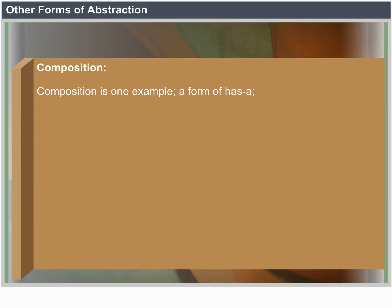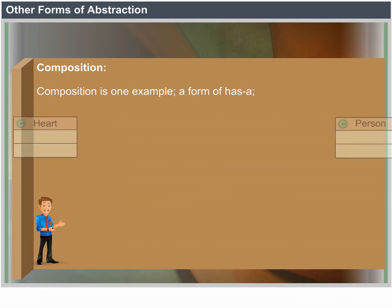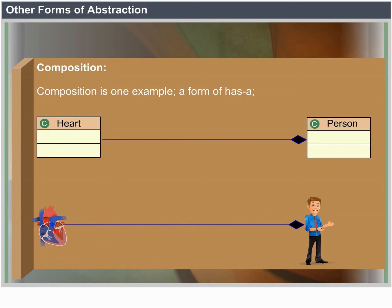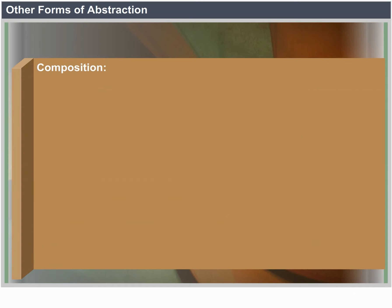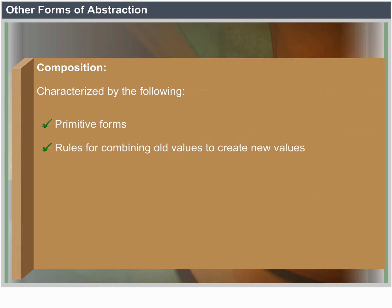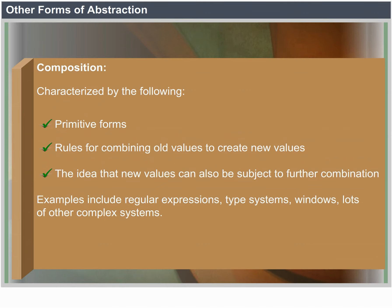Composition is one example of a 'has a' relationship. For instance, a heart is a part of a person — the heart does not exist without the person; this is an example of composition. It is characterized by primitive forms, rules for combining old values to create new values, and the idea that new values can also be subject to further combination. Examples include regular expressions, type systems, windows, and many other complex systems.